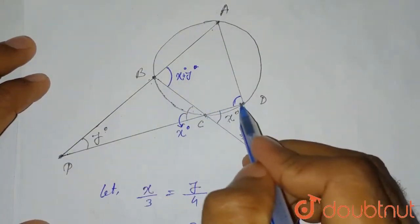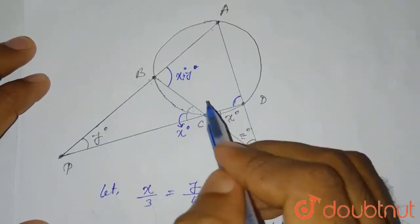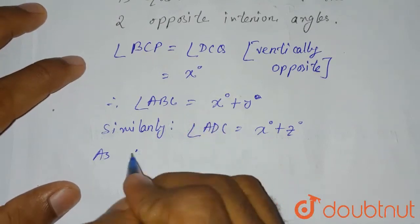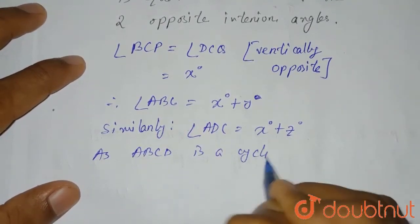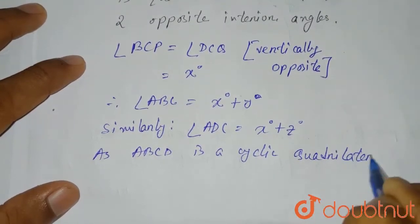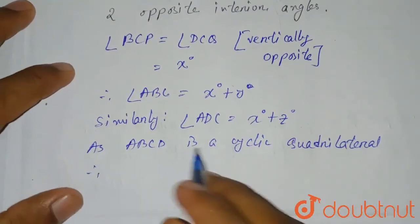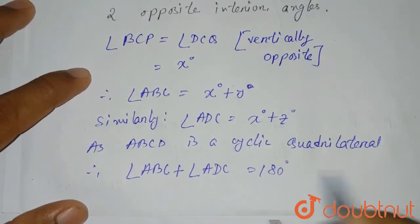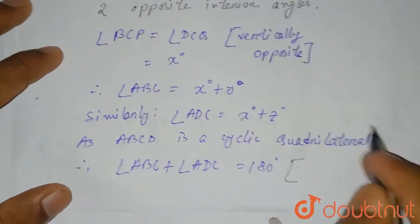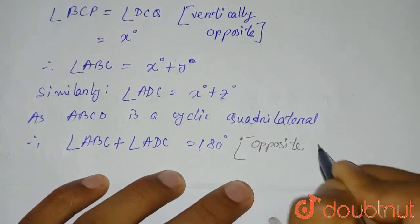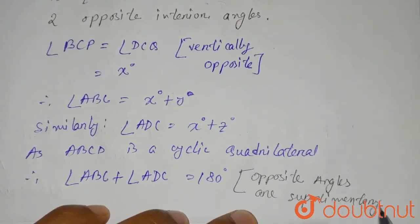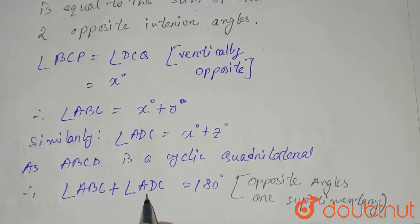ABCD is a cyclic quadrilateral. In a cyclic quadrilateral, opposite angles are supplementary, meaning they add up to 180 degrees. Therefore, angle ABC + angle ADC = 180 degrees.